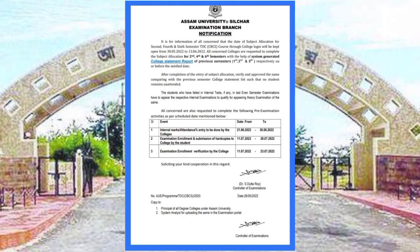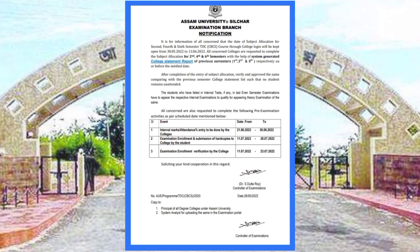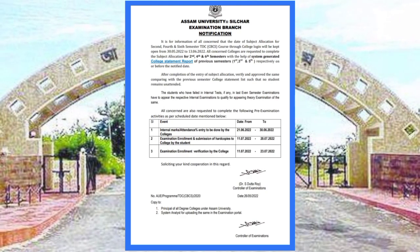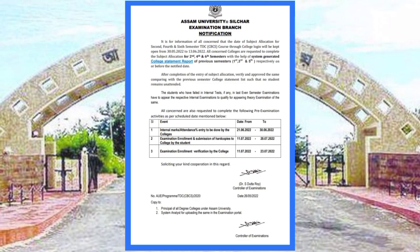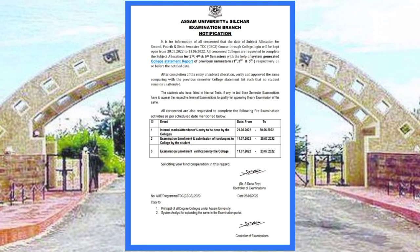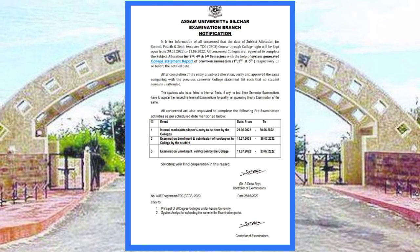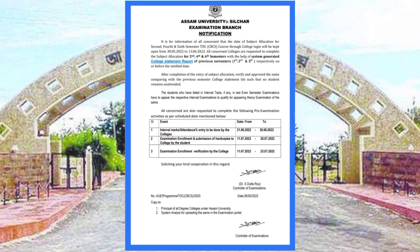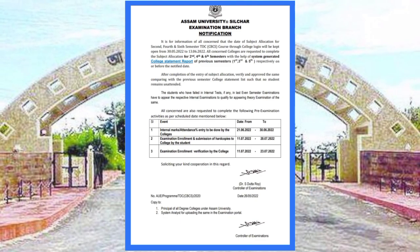The attendance percentage is to be submitted by the college to the university. Next, examination enrollment and submission of hard copies to the college by students. You have the exam enrollment — form fillup and enrollment dates are provided for this purpose.